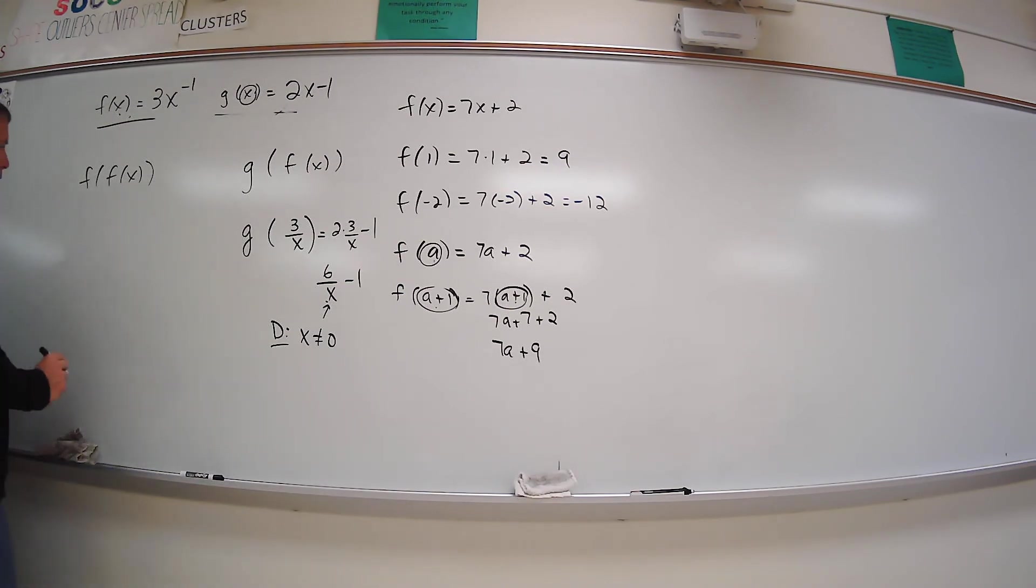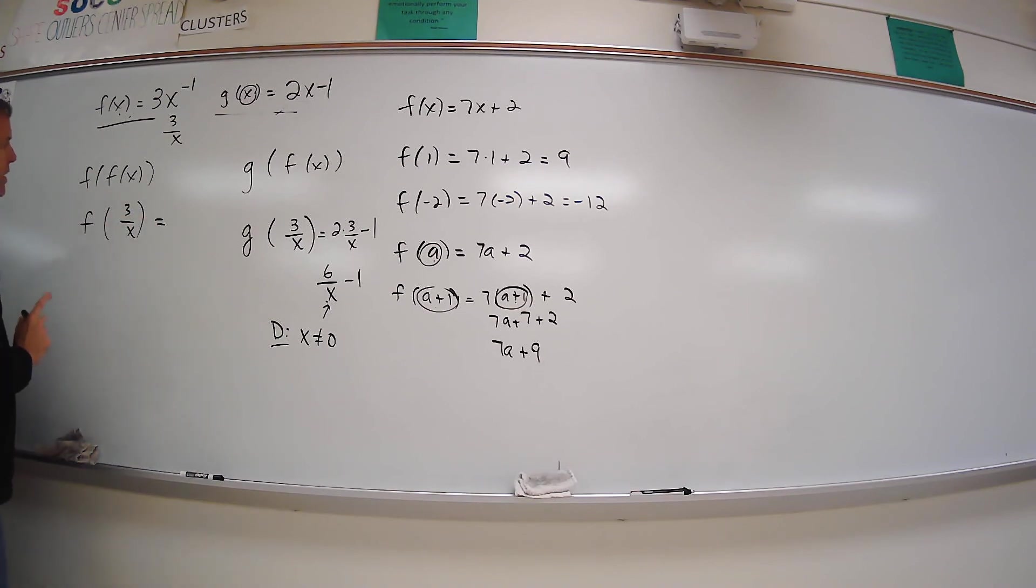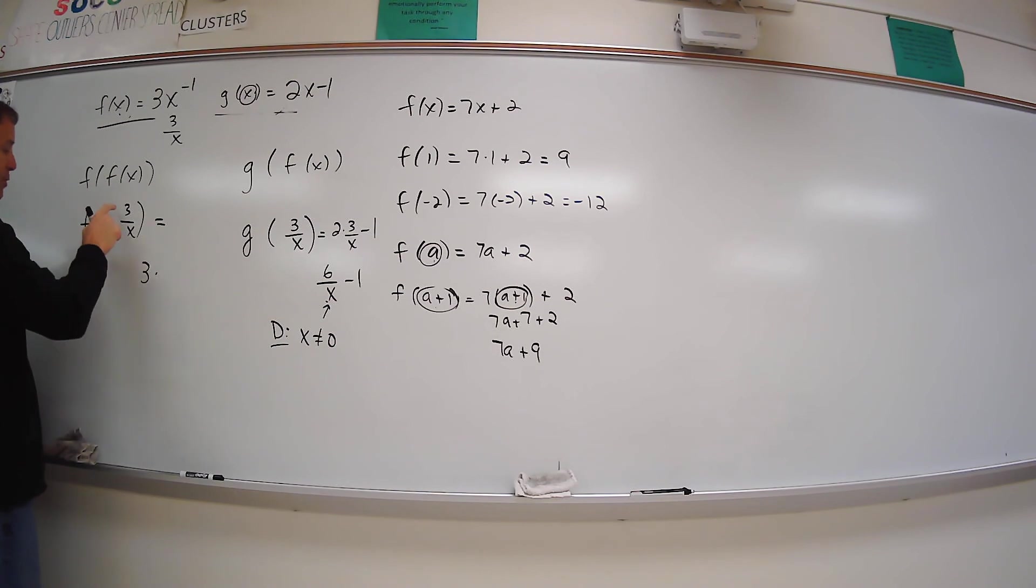So we go f of whatever f of x is. Well, we talked about that being 3 over x. So let's do that. 3 over x. Now, the f function says we take 3 times whatever is in parentheses to the negative 1 power.